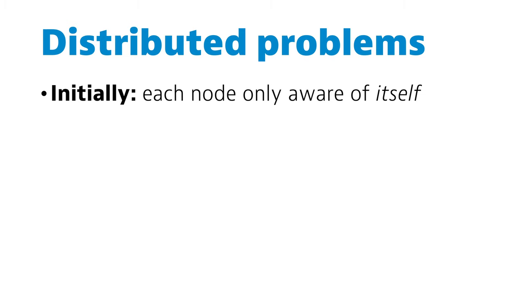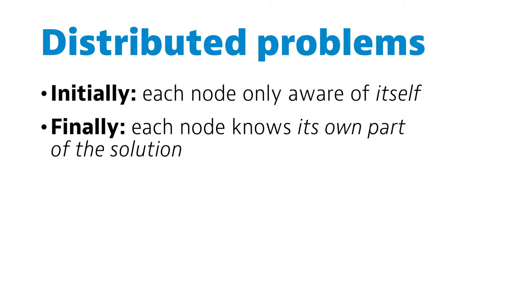Initially, each node is only aware of itself. And eventually, each node needs to figure out its own part of the solution. For example, if you do graph coloring, each node needs to know its own color. Let's go through this more carefully. This is critical — this is the key difference between the theory of distributed computing and the theory of classical centralized sequential computing.